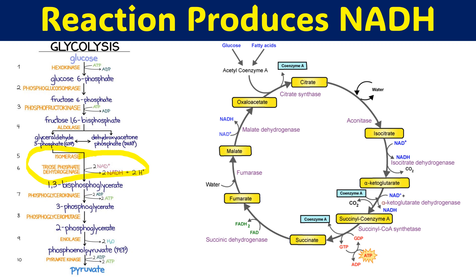In glycolysis, NAD+ is converted to NADH — that is one reaction. In the Krebs cycle, isocitrate is converted to alpha-ketoglutarate, producing NADH. Then alpha-ketoglutarate is converted to succinyl-CoA, and NAD+ is again converted to NADH. Then malate dehydrogenase converts malate to oxaloacetate, also generating NADH.